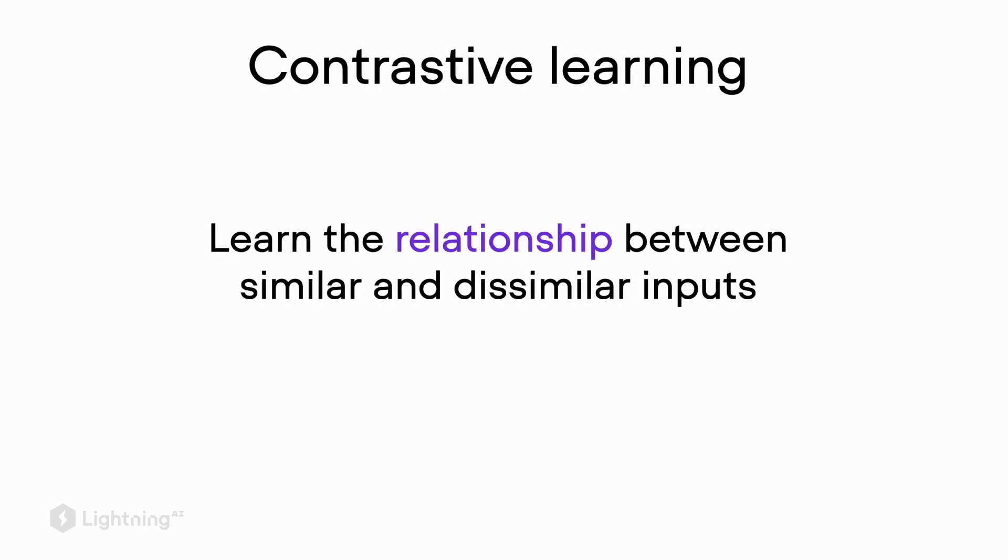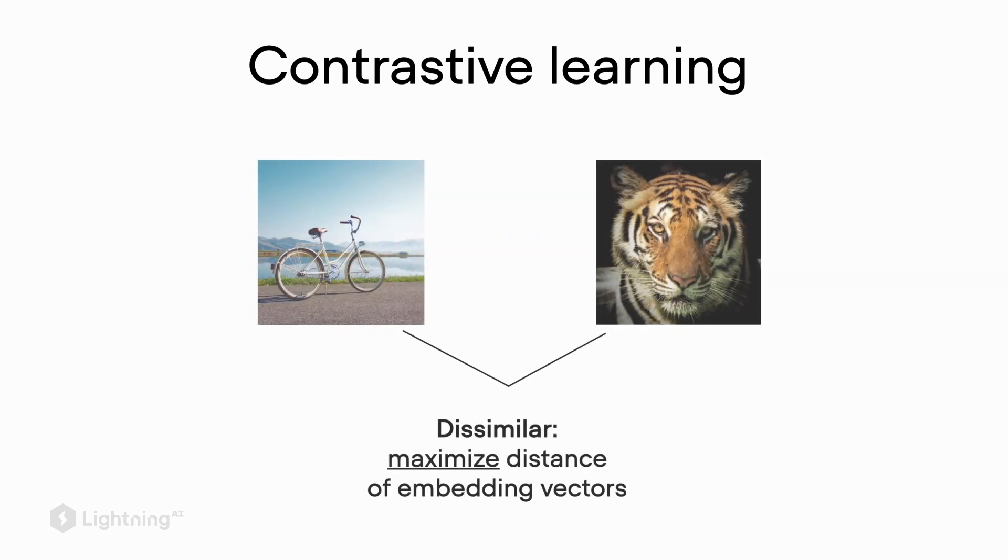Let's now talk about the second category of self-supervised learning: contrastive learning. In contrastive learning, we learn the relationship between similar and dissimilar inputs. Suppose we have two input images here, the spike and the tiger. These input images are dissimilar, they're very different. In this case, we want to maximize the distance between the representations of these two images.